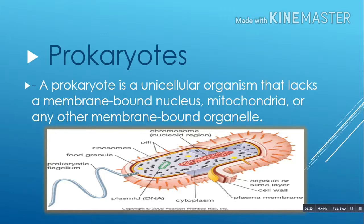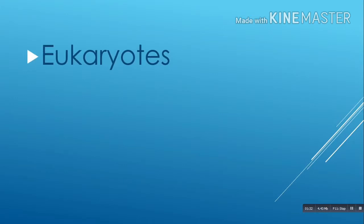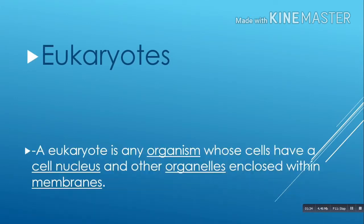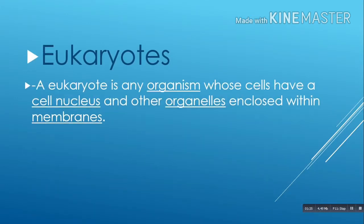Now, what is a eukaryote? A eukaryote is any organism whose cells have a cell nucleus and other organelles enclosed within membranes. Eukaryotic cells are the more complex cells that make up plants, fungi, and animals.